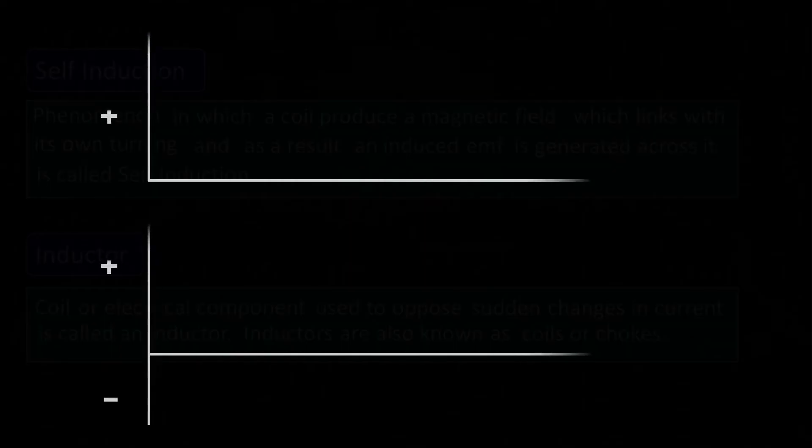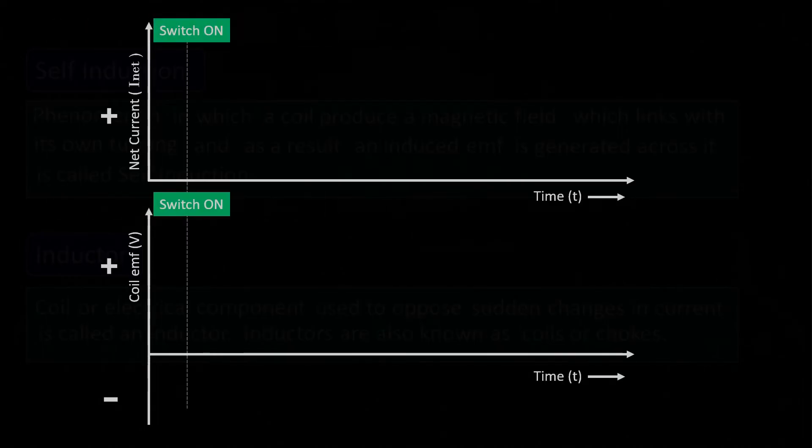Now, let us plot the graph for opposite EMF induced by the coil and net current flowing in a circuit with time t when we switch on. Let us first plot the graph for the opposite EMF induced by the coil with time t when we switched on.